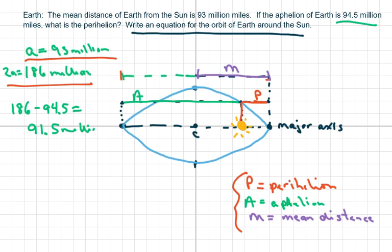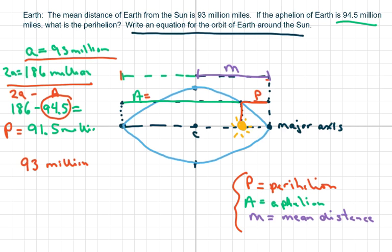We already know a is 94.5 million. The distance from the center of the ellipse to the Sun is the focus, c. That's going to be 93 million minus your perihelion P of 91.5 million, which gives us c equals 1.5 million miles.